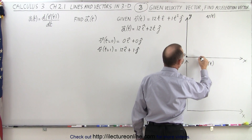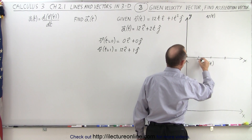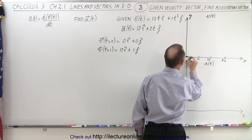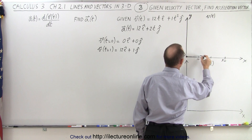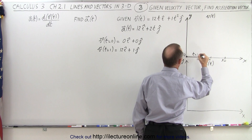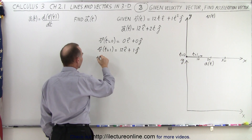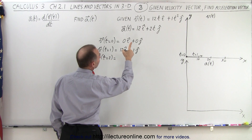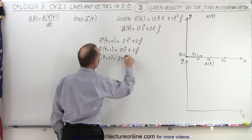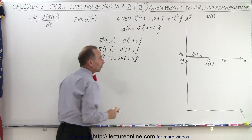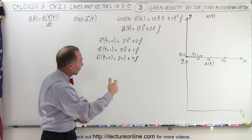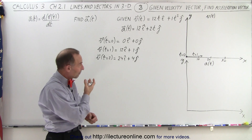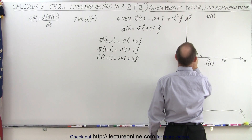So our velocity vector at t equals one, plotted on a grid, gives us a vector pointing in that direction. Finding the velocity vector at t equal to 2 gives us 2 times 12, which is 24 in the i direction, plus 4 in the j direction. You can see that we have steady gains of 12 per second in the i direction, but in the j direction we have a quadratic increase in the velocity component.